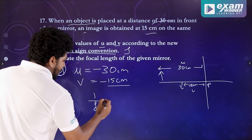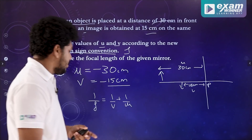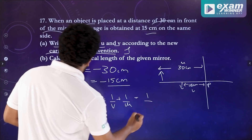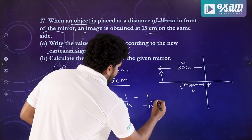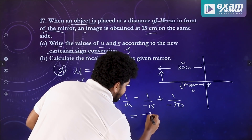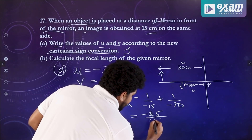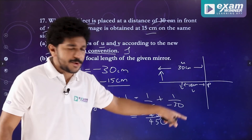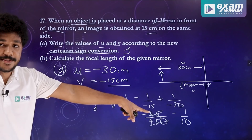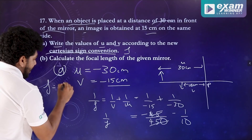We have the mirror formula: 1/f = 1/v + 1/u. So 1/f = 1/(−15) + 1/(−30). That gives (−30 − 15) / (30 × 15) = −45 / 450 = −1/10. So 1/f = −1/10, therefore f = −10 cm.